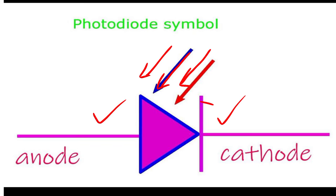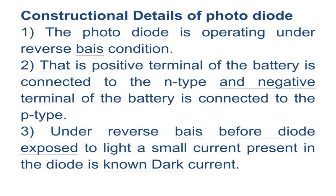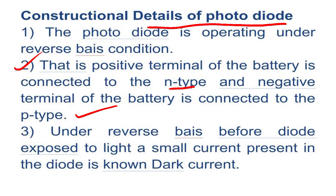The photodiode operates under a reverse bias condition. Most diodes are operated under forward bias, but the photodiode is operated under reverse bias. In reverse bias, the positive terminal of the battery is connected to the N-type and the negative terminal is connected to the P-type.